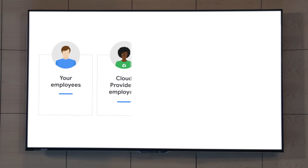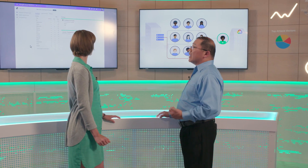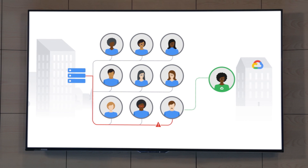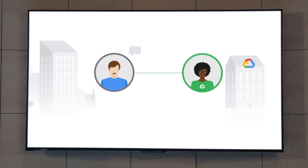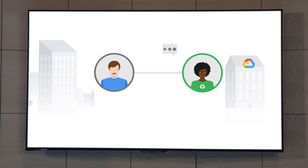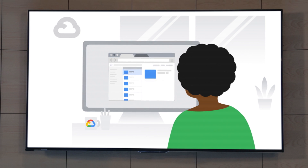Another potential threat you may need to be concerned about is possible data access from your cloud providers' employees. To address that concern, Google has introduced Access Transparency, which is unique to Google Cloud Platform and provides an audit trail of actions taken by Google's support and engineering when they interact with your data and system configurations on Google Cloud. Let's walk through a scenario that shows off Access Transparency. Say that one of your employees is having problems accessing some files and needs to call Google Support. Once that employee is speaking to a Google Support agent, the employee walks through the problem, and to fix it, the Google Support agent needs to access some of the customer's system settings.